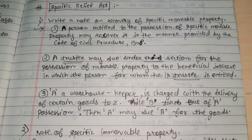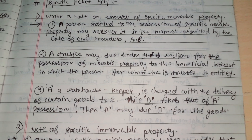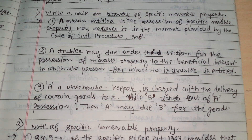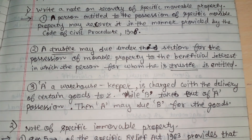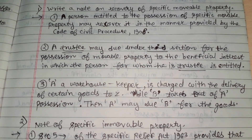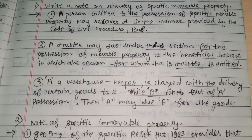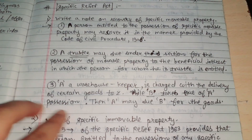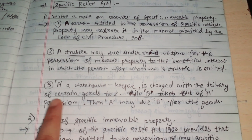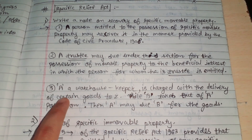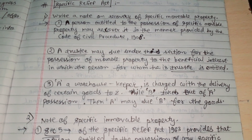Example: A is a warehouse keeper, charged with the delivery of certain goods to Z. While B takes the goods out of A's possession without A's permission, A may sue B for the goods.